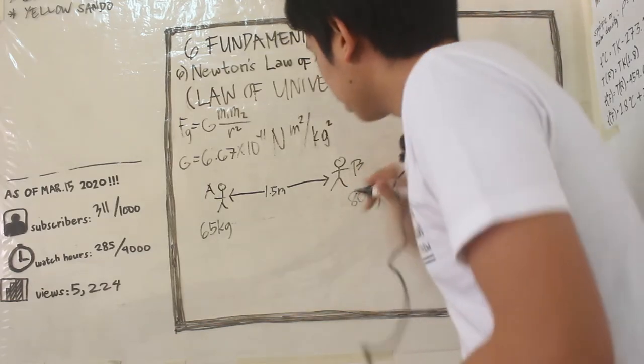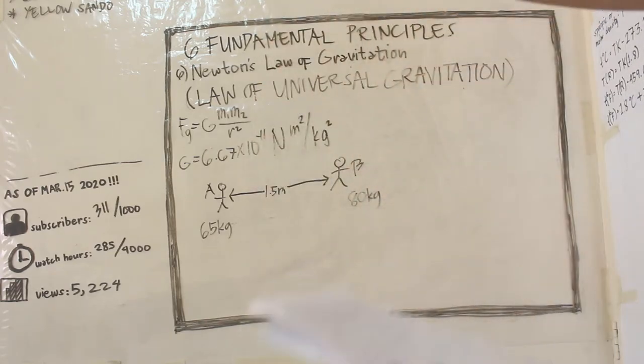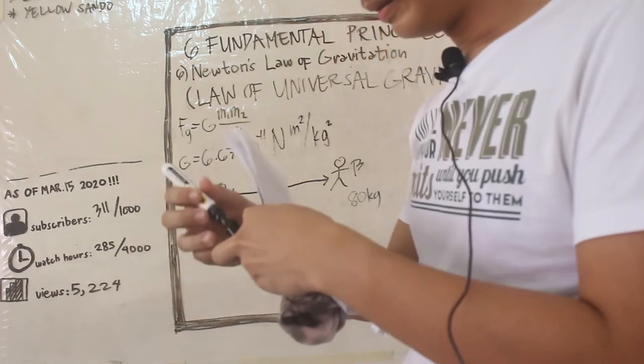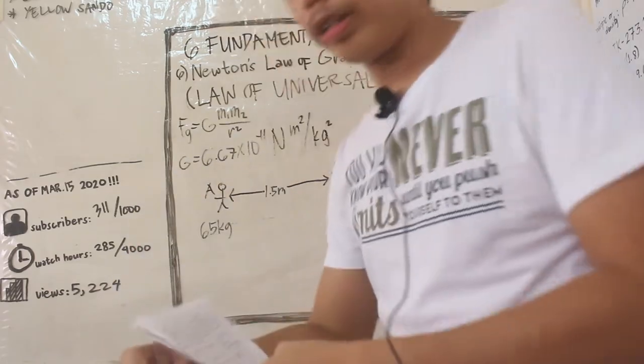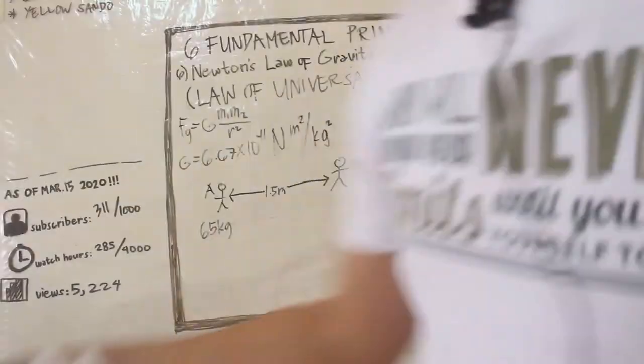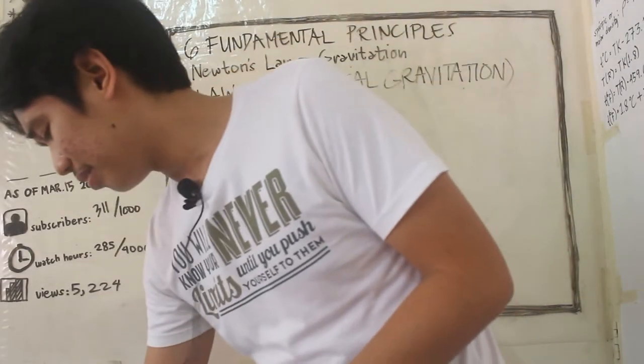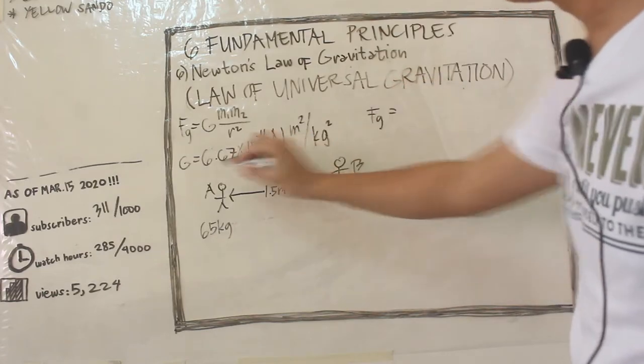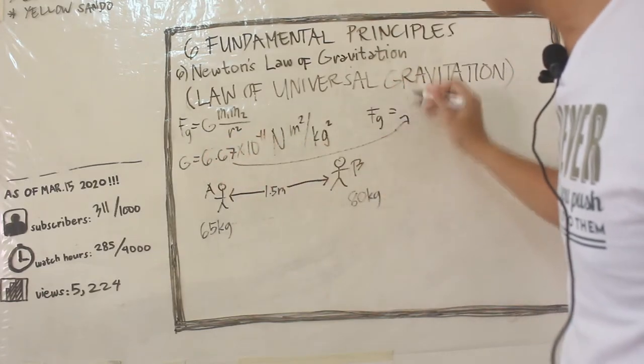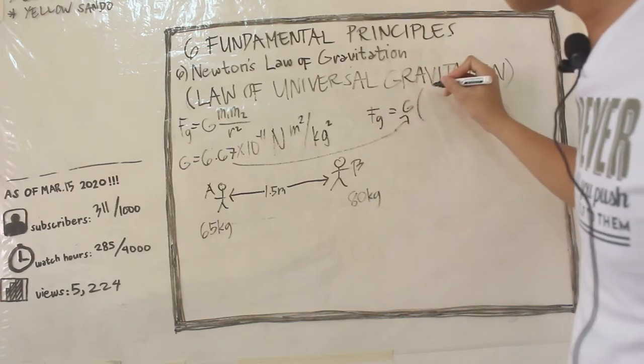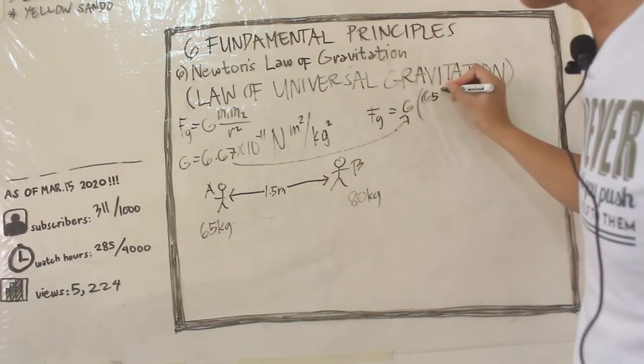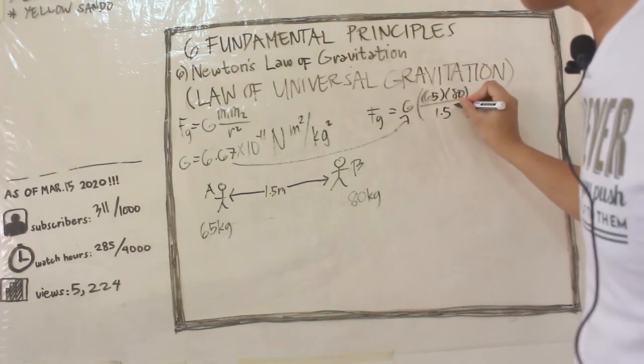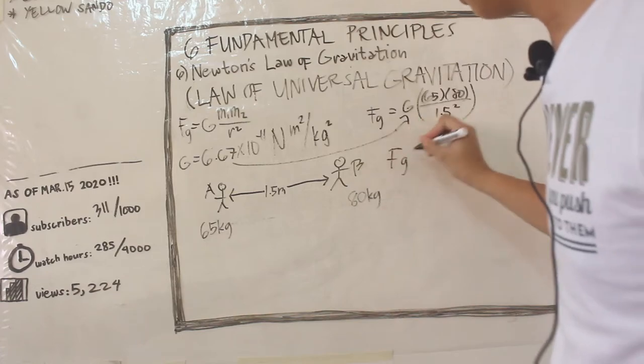The question is to find how large their gravitational force is. Basically guys, just substitute it. Fg equals, put here G, times 65 times 80 over 1.5 squared. That's what we'll get.